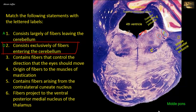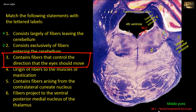Deep to the floor of the upper part of the fourth ventricle and close to the midline is the medial longitudinal fasciculus. Since it is a tract consisting of ascending and descending fibers that connect vestibular and cochlear nuclei in the medulla with nuclei controlling extraocular muscles — oculomotor, trochlear, and abducent — this tract is involved in coordinating head and eye movements, thus it matches with statement 3: contains fibers that control the direction the eyes should move.